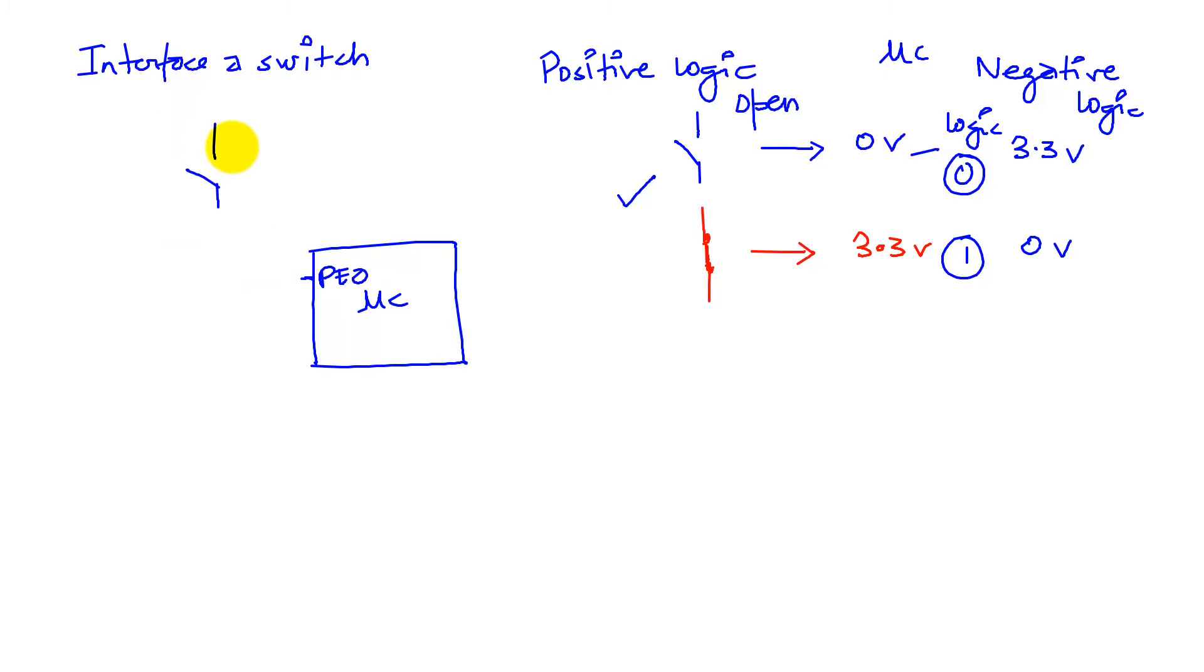This is the switch I want to interface. I want it to have a positive logic behavior. So I have at my switch my 3.3 volts and my ground.